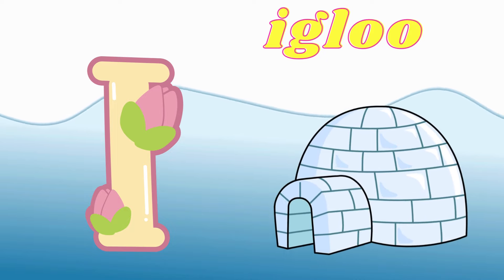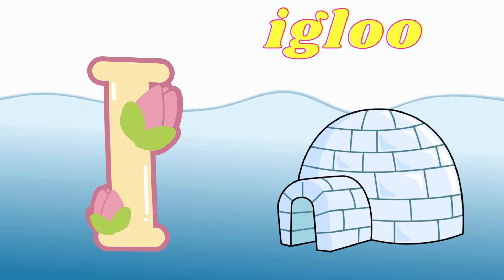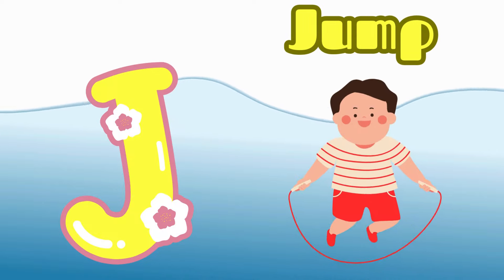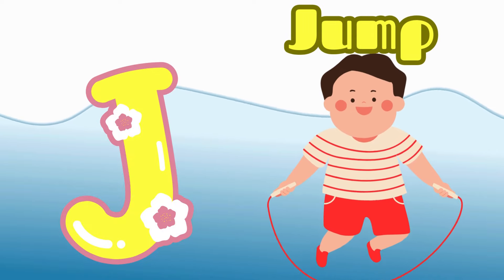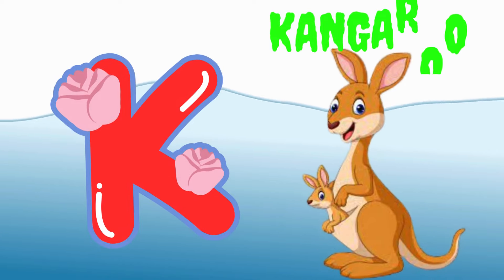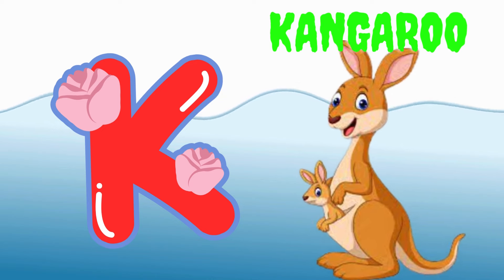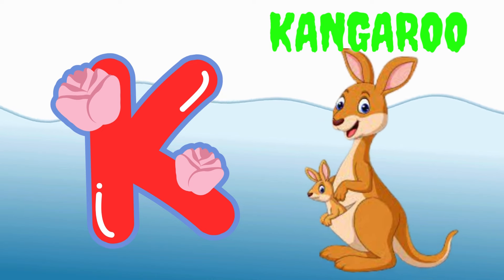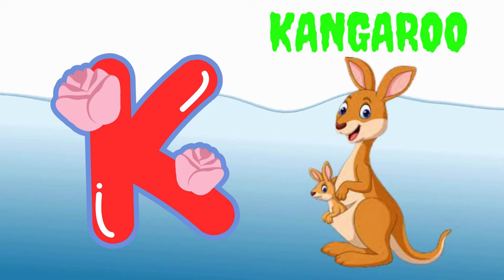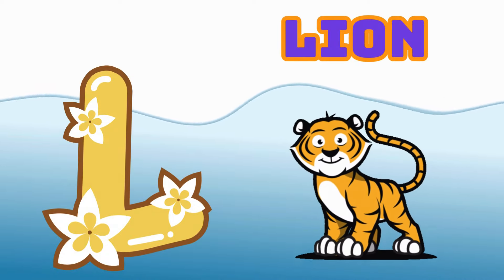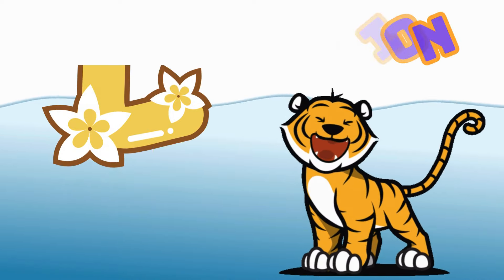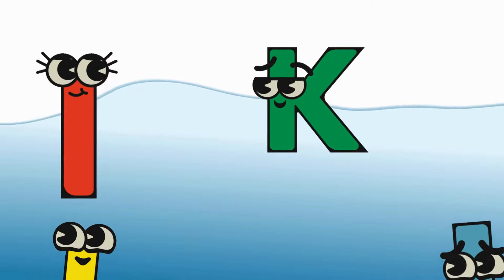I is for Igloo, I-I-Igloo. J is for Jump, J-J-Jump. K is for Kangaroo, K-K-Kangaroo. L is for Lion, L-L-Lion.